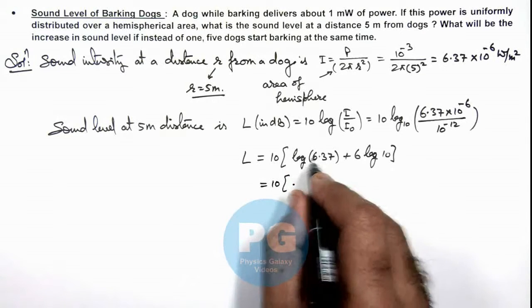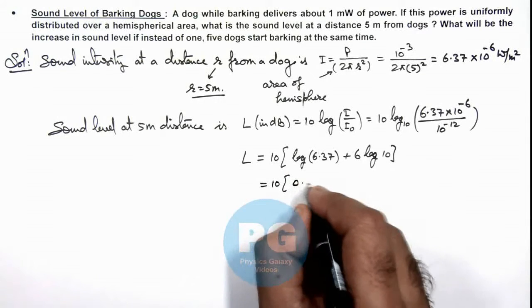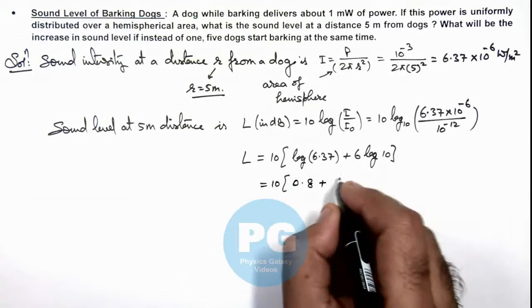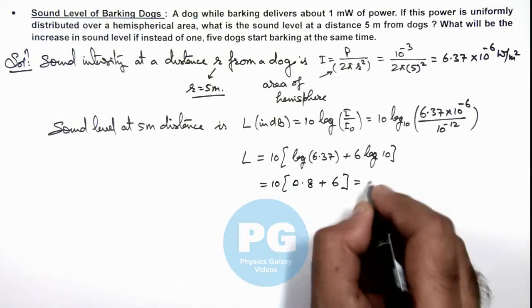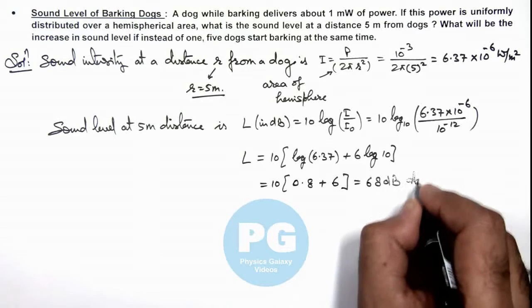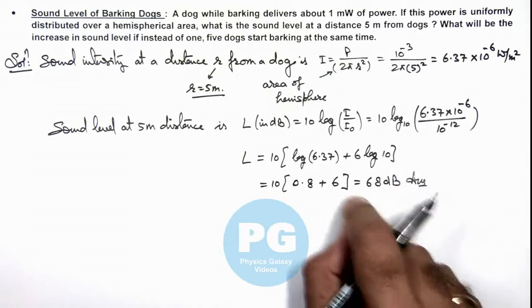Log 6.37 will be 0.8 plus 6 log 10 is 6 only, so this gives us 68 dB. This is one answer for this problem when a dog is barking.